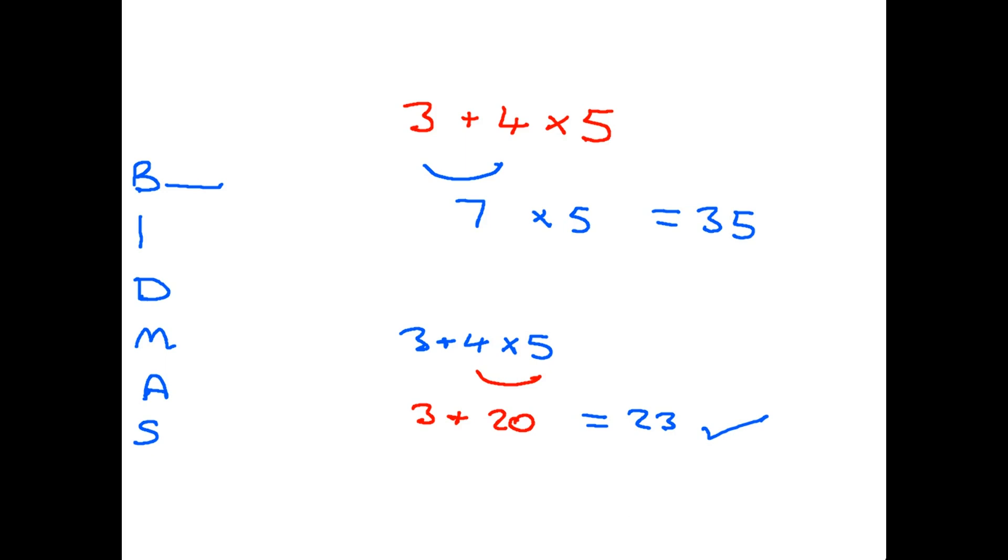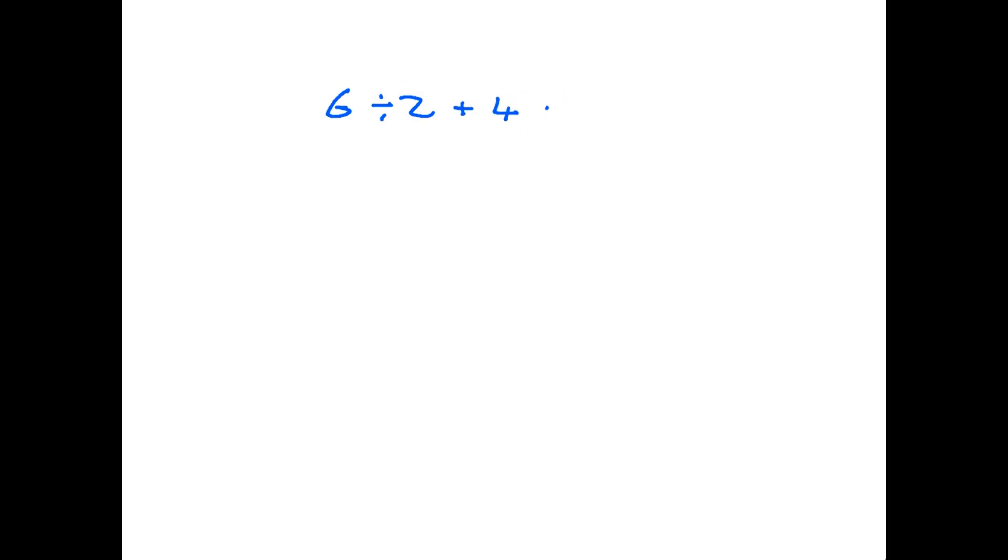Let's try another example. Let's say we look at 6 ÷ 2 + 4 × 5. Okay, let's go again. We start with B for brackets. No. Indices? No. Division? Yes, we've got a division in this one, so we're going to do that first. 6 ÷ 2 is 3, so we now have 3 + 4 × 5. The next letter we come across is M for multiplication. Yes, there is a multiplication here. So 4 × 5 is 20. 3 + 20, 23.